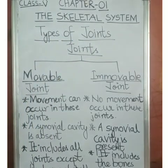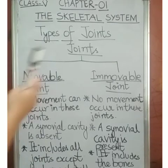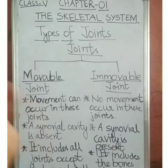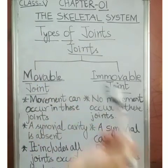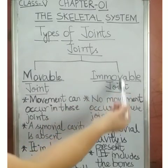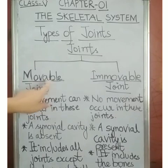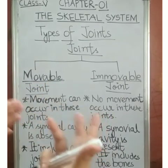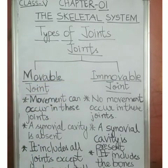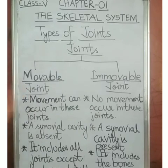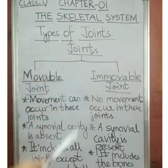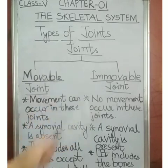We have done joints and I told you about synovial cavity also. Now comes types of joints. There are mainly two types of joints — movable joint and immovable joint. Movable joint is a type of joint where movement occurs, and immovable joint is a type of joint where no movement occurs.